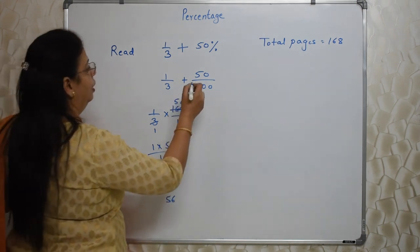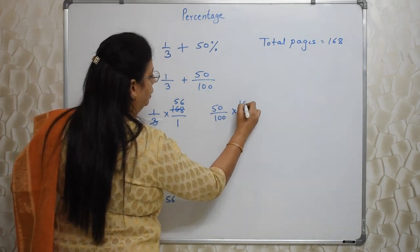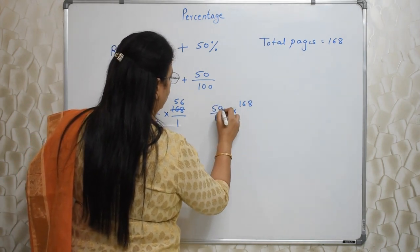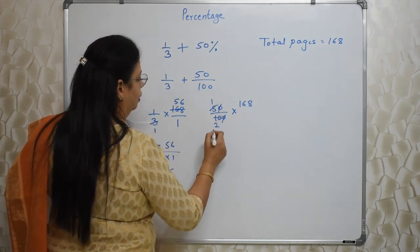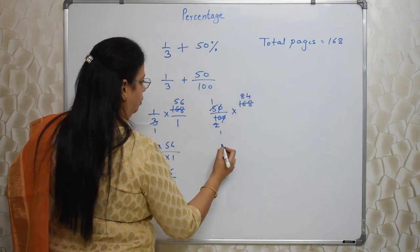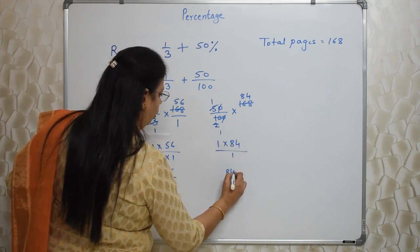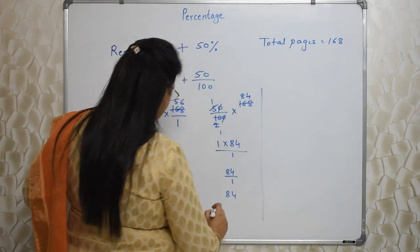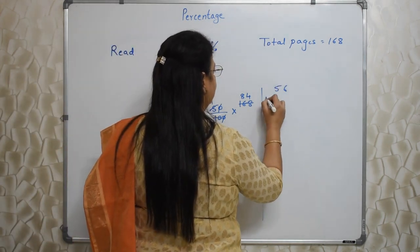Now 50 upon 100. 50 upon 100 of 168. 50% of total is read already, reading ho gaya. So first we will cancel these zeros. Then five ones are five, five twos are ten, two ones are two, two eights are sixteen, and two fours are eight. So one into 84 upon one, that is 84 upon one, that is 84. Means 56 pages ho gaya hai, 84 ho gaya hai. Itna readik to ho gaya hai. 56 plus 84.